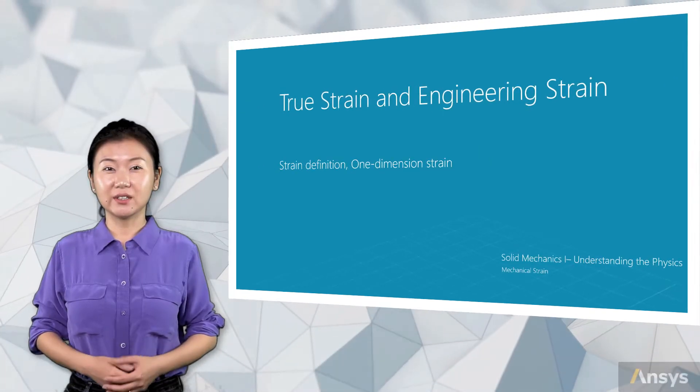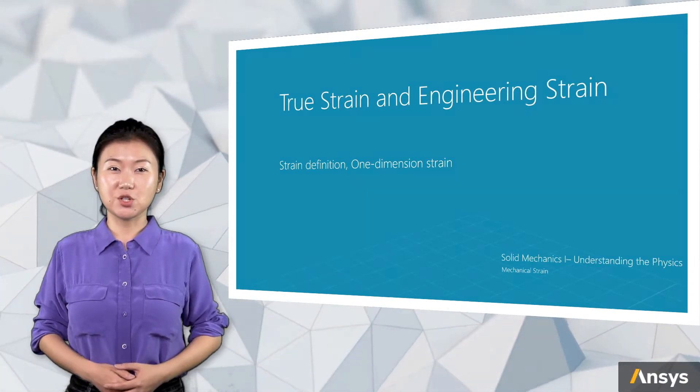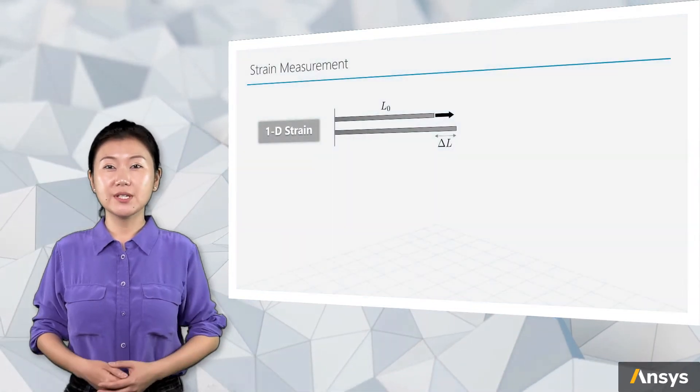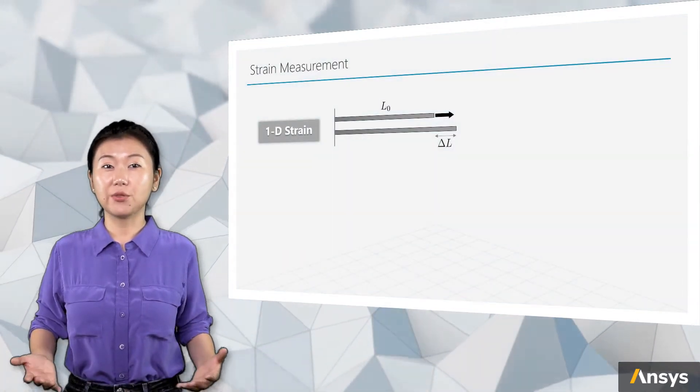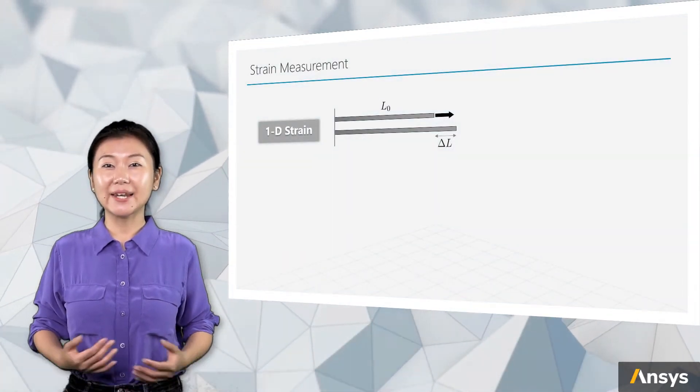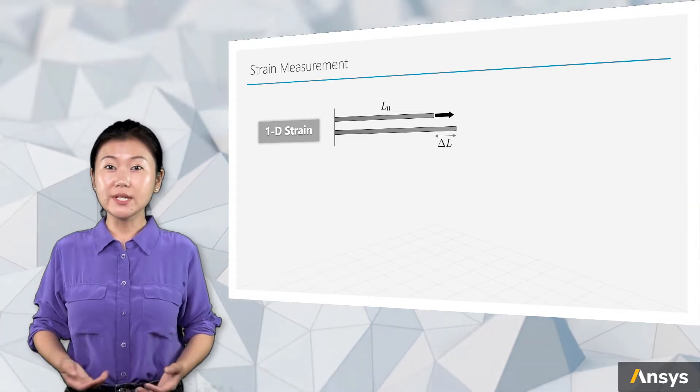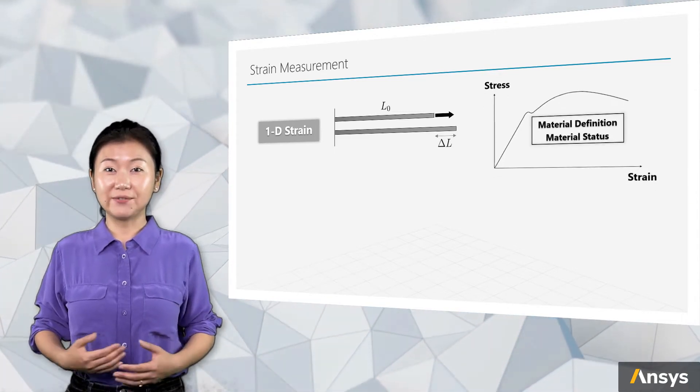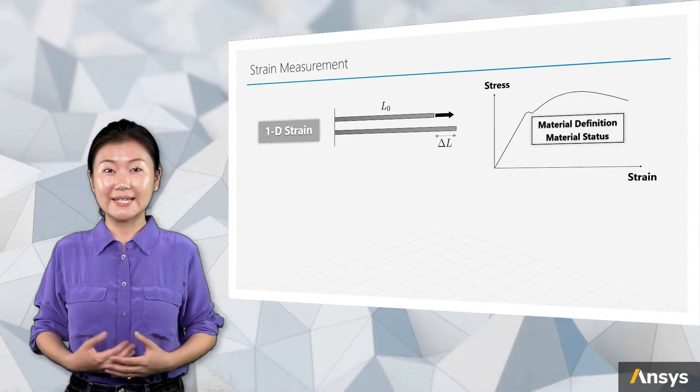Definition of strain is not unique. Let's start with one-dimensional strain. Why start with 1D strain instead of directly talking about 3D strain? Because in mechanical analysis and simulation, 1D strain is often used in material definition and in determining material status.